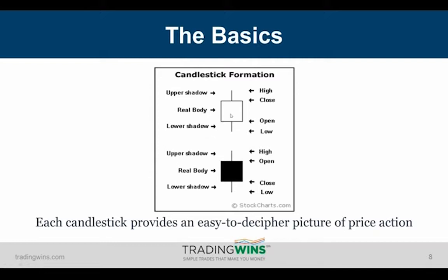Let's talk about individual candlesticks. On most charting platforms, you're either going to see clear or green candles for bullish, and black or red for bearish candles. It really doesn't matter which color you use, as long as you know which one is bullish and which is bearish. If a candle is bullish — clear or green — the opening price is at the lower edge of the body and the closing price is at the upper edge. This is why it's colored: it closed higher than where it opened.